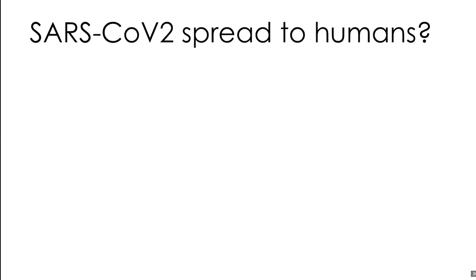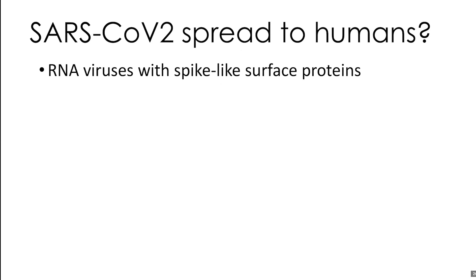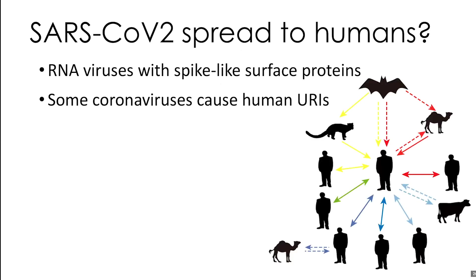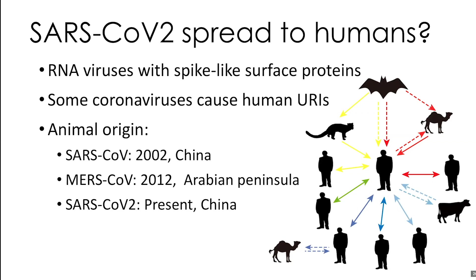How is SARS-CoV-2 spread to humans? Coronaviruses are RNA viruses with spike-like surface proteins, which is how they get the name coronavirus. Most coronaviruses we deal with regularly are spread from human to human and cause upper respiratory tract infections. However, some coronaviruses are of animal origin. There was SARS-CoV, the original SARS virus, first found in China in 2002. There's also MERS-CoV, Middle Eastern Respiratory Syndrome Coronavirus, first identified in 2012 in the Arabian Peninsula.